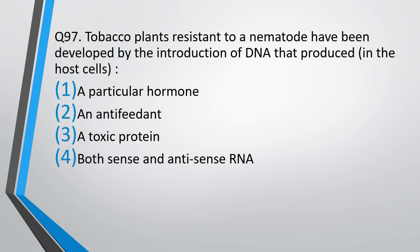Question number 97. Tobacco plants resistant to a nematode have been developed by introduction of DNA that produced: a particular hormone, an antifeedant, a toxic protein, or both sense and antisense RNA.